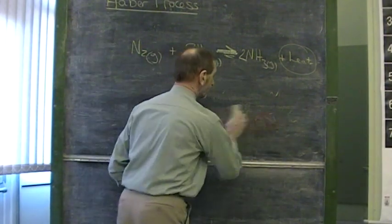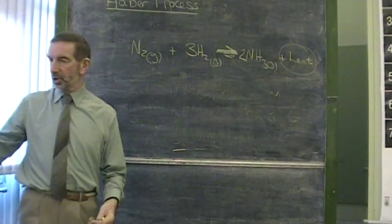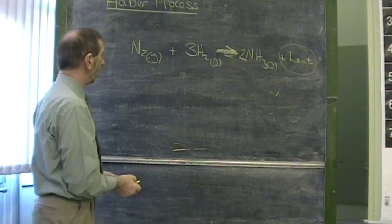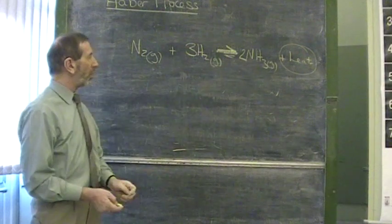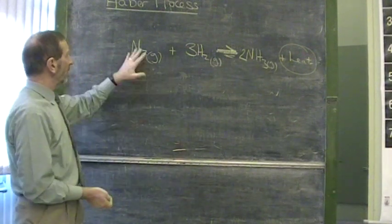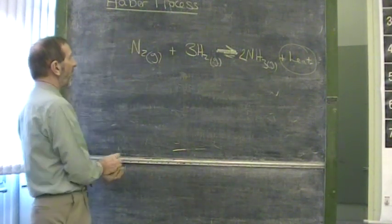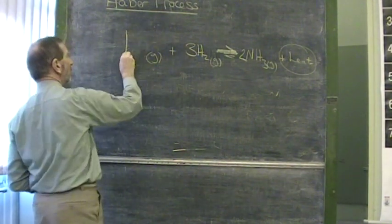What else can we do that might influence the formation of ammonia? Well, another variable at our disposal is concentration. Now, how can we encourage the forward reaction?